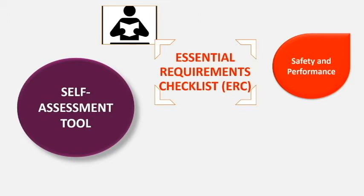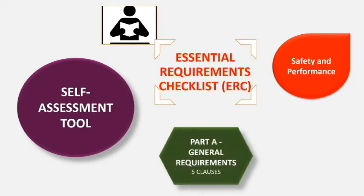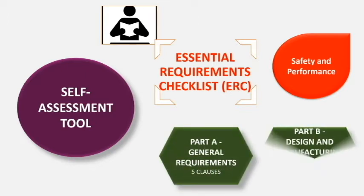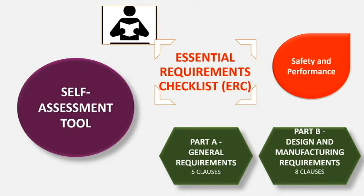The essential requirements have two parts: Part A covers general requirements and Part B covers design and manufacturing requirements. Part A has 5 clauses and Part B has 8 clauses.